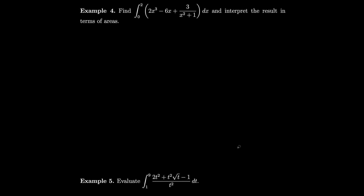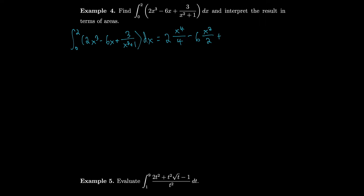Let's find the definite integral of 2x³ minus 6x plus 3 over (x²+1), dx from zero to two, and interpret the result in terms of areas. Taking the antiderivative: 2 times x⁴/4 minus 6 times x²/2 plus — for 3/(x²+1), we recall that 1/(1+x²) is the derivative of arctan. So 3/(x²+1) has antiderivative 3 times arctan(x). We evaluate the whole expression from zero to two.